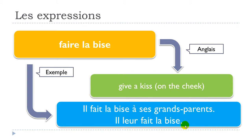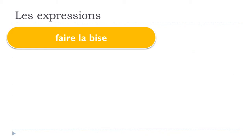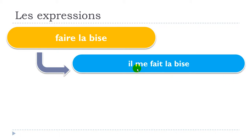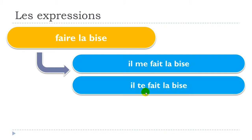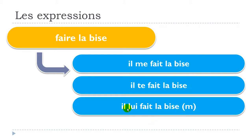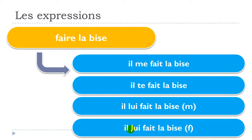In many situations we use a pronoun with this expression, so let's look at the different pronouns. For the first person singular: il me fait la bise. Second person singular: il te fait la bise. Third person singular masculine: il lui fait la bise. Third person singular feminine — same pronoun lui: il lui fait la bise.